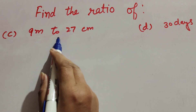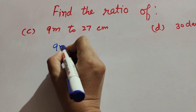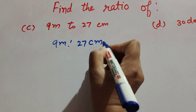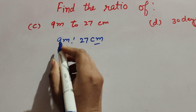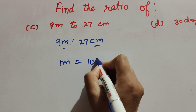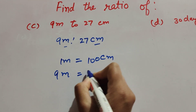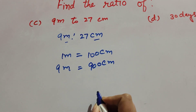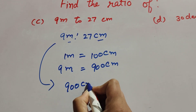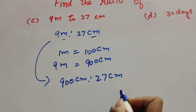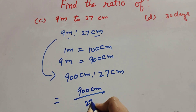Now in part C: 9 meter to 27 centimeter — we find its ratio. We write it as 9 meter ratio 27 centimeter. The units are meter and centimeter, so we change meter to centimeter. 1 meter is equal to 100 centimeter, and 9 meter is equal to 900 centimeter. We write this as 900 centimeter ratio 27 centimeter, which is 900 over 27.